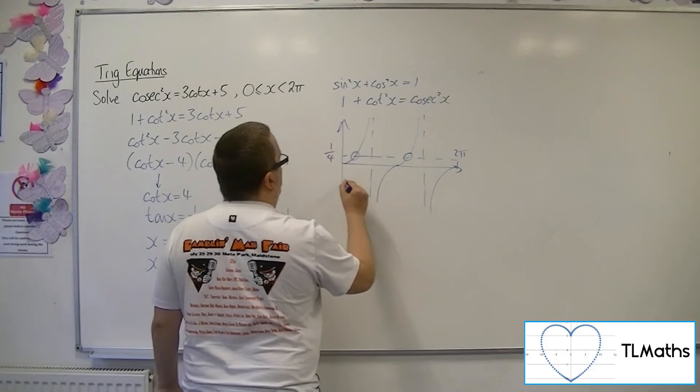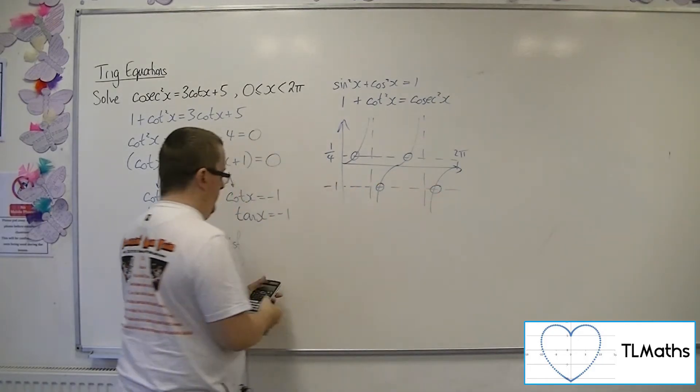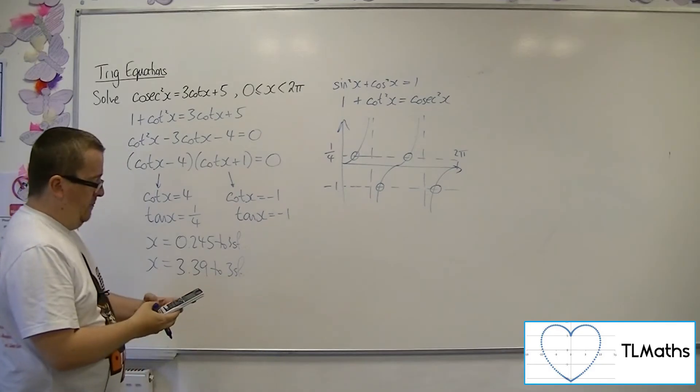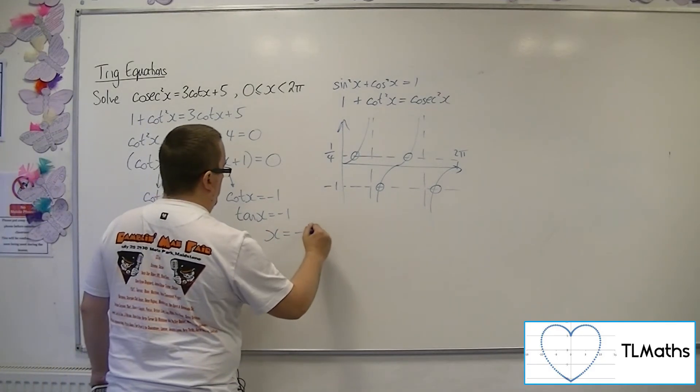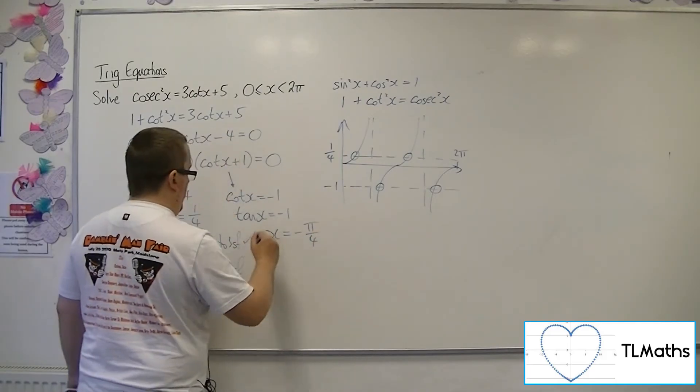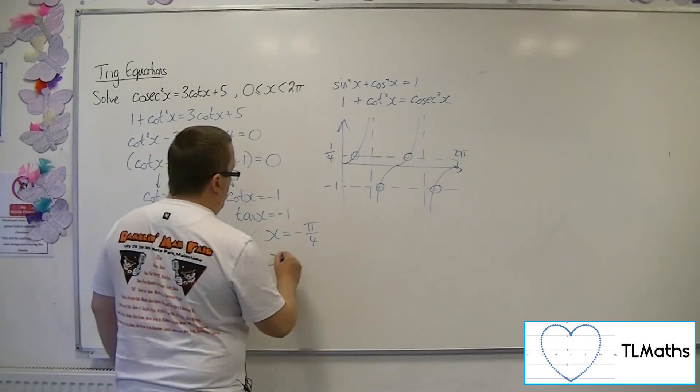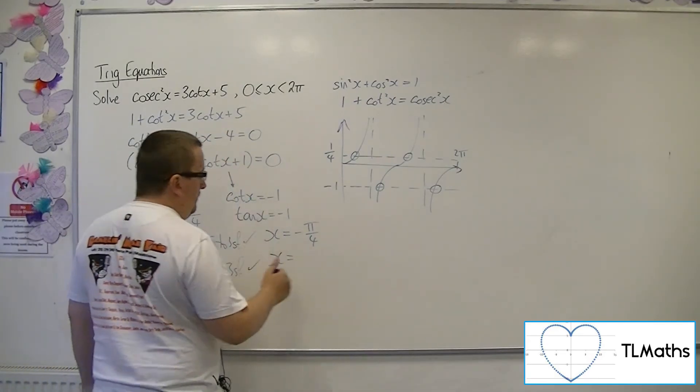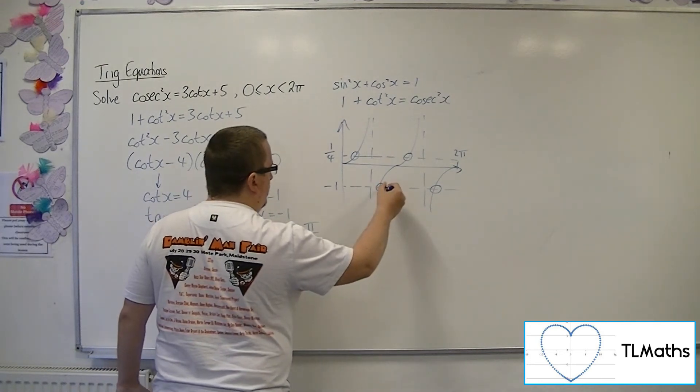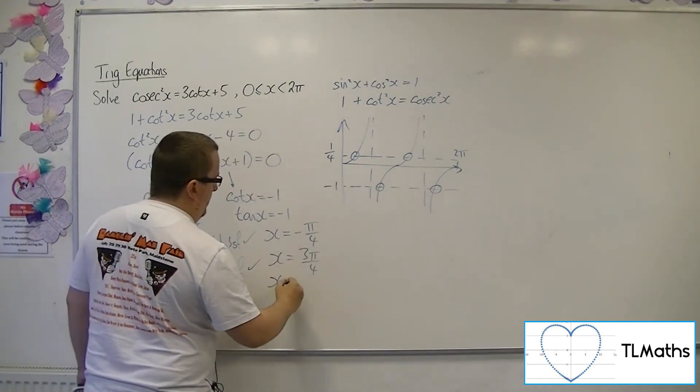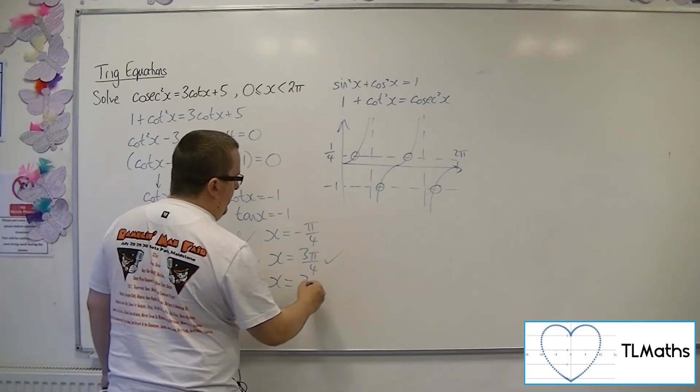For tan x equals minus 1, I'm expecting two solutions. So that means inverse tan of minus 1 is minus pi over 4. That's not a solution, however. These two were. That's not, because it's not between 0 and 2 pi. So by adding on pi, I get to 3 pi over 4. That's that one there. And then the second one is by adding on another pi, which gets me to 7 pi over 4.